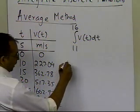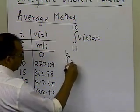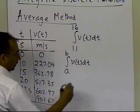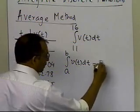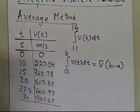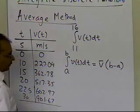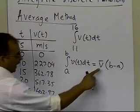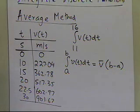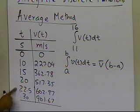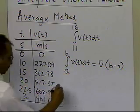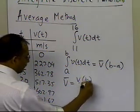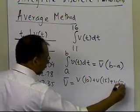From integral calculus, the integral can be defined exactly as the average value of the function times the width of the interval — that is, v-bar multiplied by (b minus a), where v-bar is the exact average value of the function. Since finding the exact average requires an infinite number of points, I'll approximate v-bar using the velocity at t=10, t=15, and t=20, divided by 3.